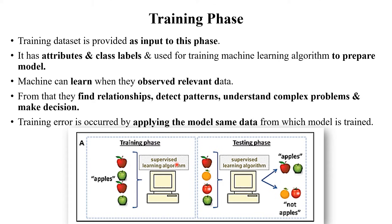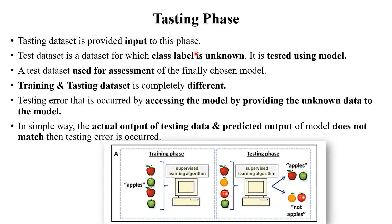In the training phase we use a supervised learning algorithm, and the input is in the format of attributes and labels — labels are compulsory in supervised learning. The machine learns from that data. Next is the testing phase. First you train the machine using particular images and their labels, such as apple images. The machine now knows that information.